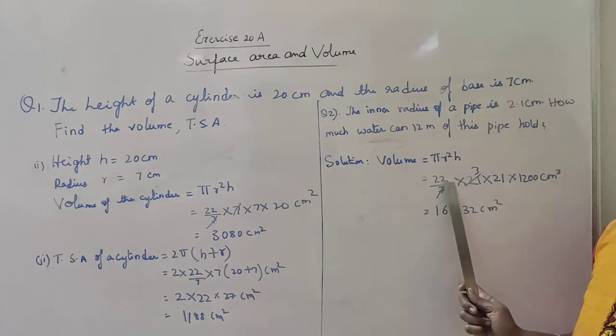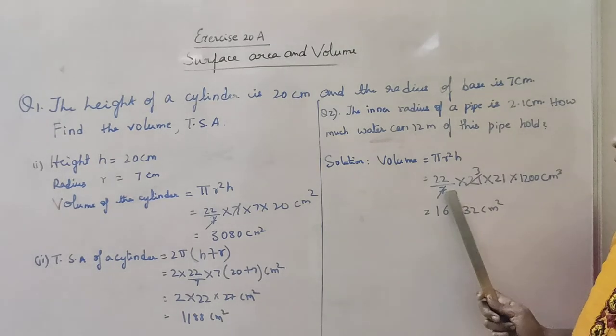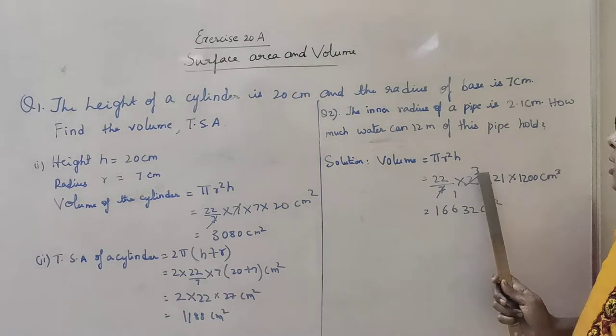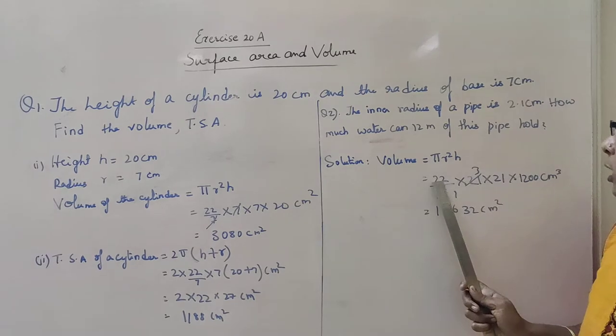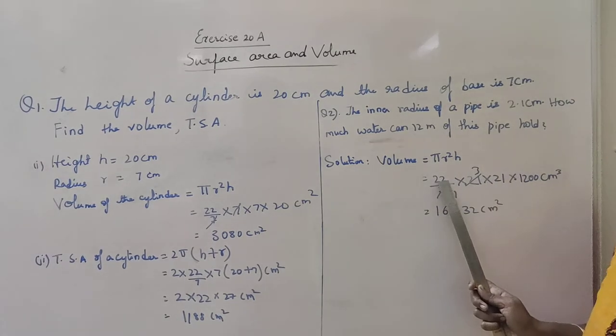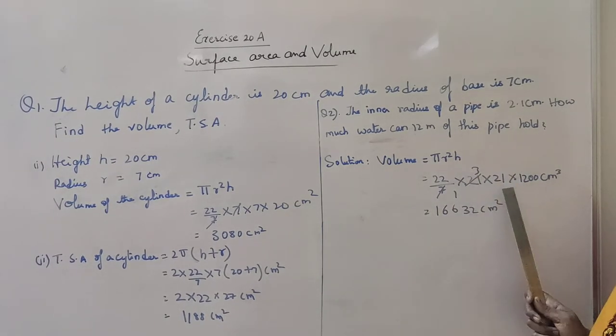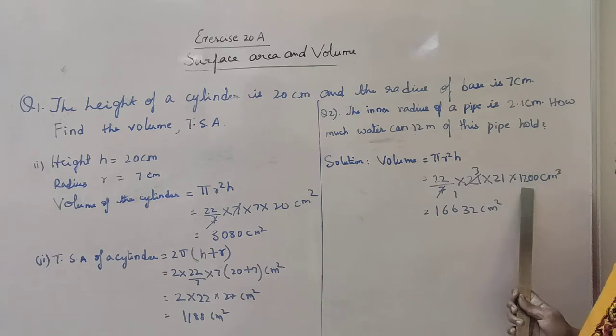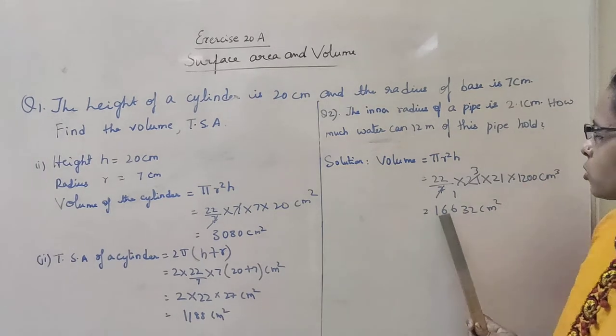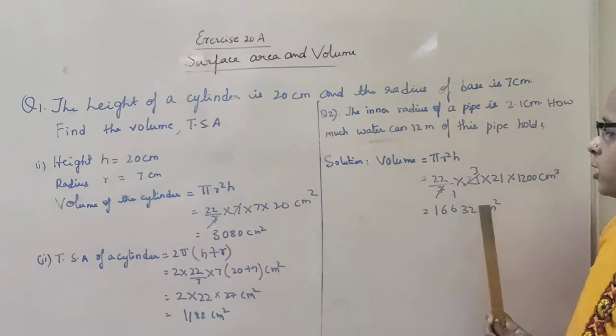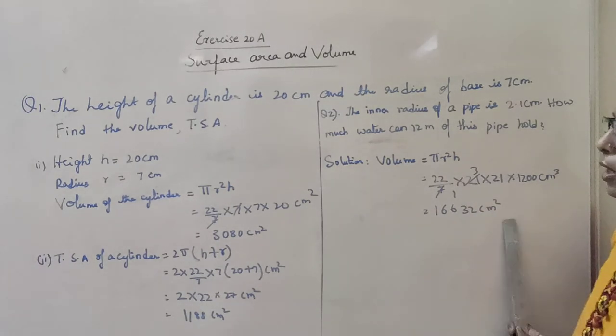So multiply 22 by 7. Here 7 and 21 get cancelled, 7 threes get cancelled. So multiply all three, that is 21 into 3 into 21 into 1200 cm square. That gives 16,632 cm square.